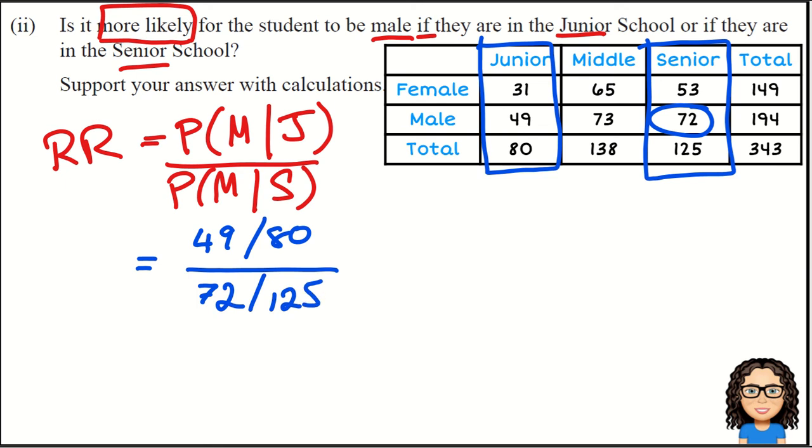Now I want to calculate that, put that into my calculator, and I'm going to get a value here of 1.06. I need to know what this means. What it means is that the proportion on the top is 1.06 times bigger than the proportion on the bottom of that fraction. So that tells me that this probability on the top, the probability of male given junior, that is 1.06 times more than the number on the bottom.